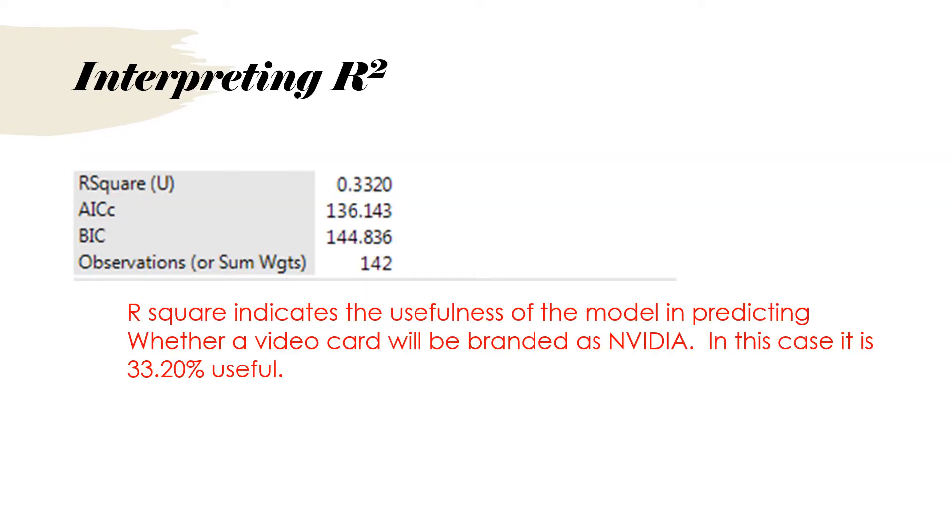The next step is looking at R-squared. Again, instead of talking about the amount of explained variation, we're simply going to use R-squared as a value showing how useful this model is in predicting NVIDIA cards. It's not nearly as large as most R-squares in multiple regression, but this one is 33.2% useful.